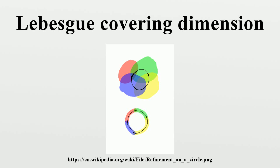A modern definition is as follows. An open cover of a topological space X is a family of open sets whose union contains X. The ply of a cover is the smallest number N such that each point of the space belongs to at most N sets in the cover. A refinement of a cover C is another cover, each of whose sets is a subset of a set in C.